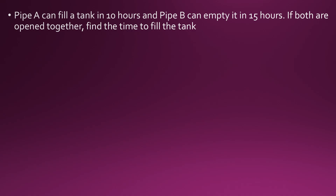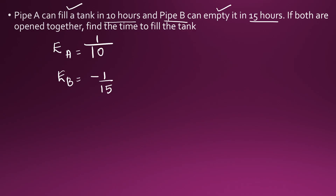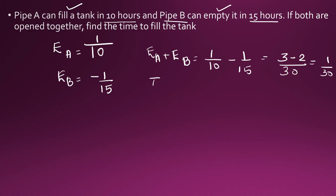Pipe A can fill a tank in 10 hours and pipe B can empty it in 15 hours. If they are both open together, find the time to fill the tank. Efficiency of pipe A is 1 by 10. Since filling is taken as positive and emptying as negative, efficiency of pipe B is minus 1 by 15. When both are open together: 1 by 10 minus 1 by 15. LCM is 30, giving 3 minus 2, which is 1 by 30. So the time taken is 30 hours.